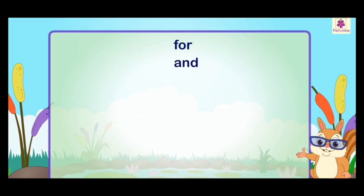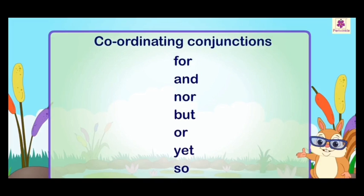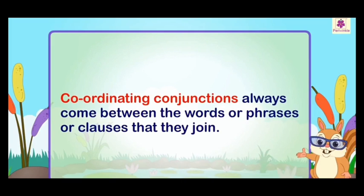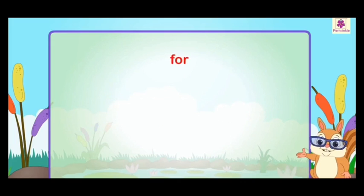First, I will tell you about For, And, Nor, But, Or, Yet, So — these are called coordinating conjunctions. FANBOYS means coordinating conjunctions. These conjunctions always come between the words, phrases, or clauses that they join.